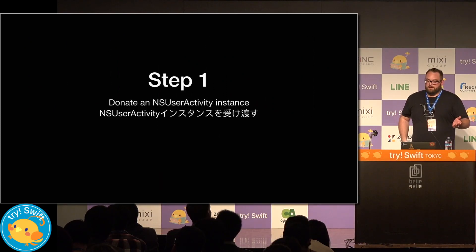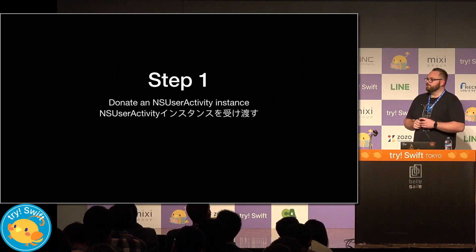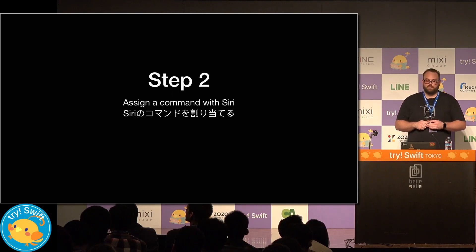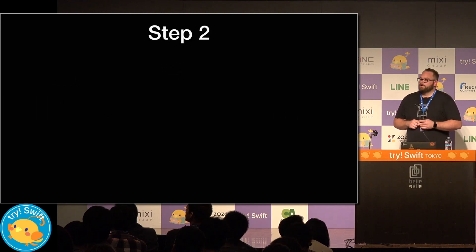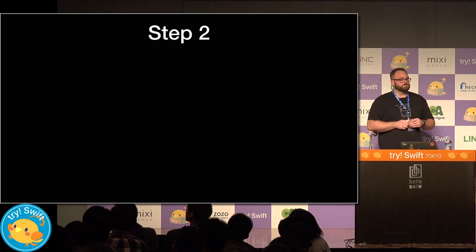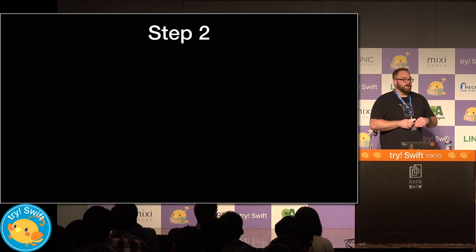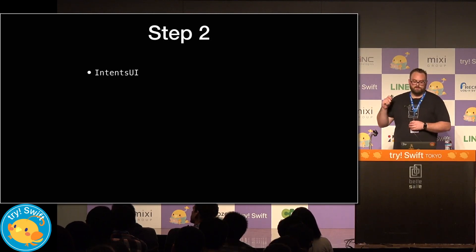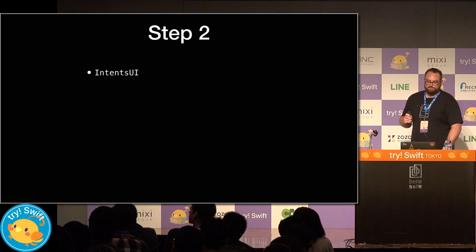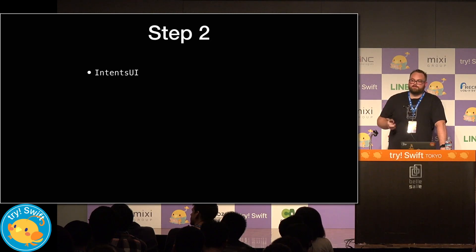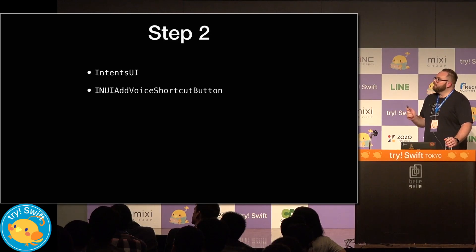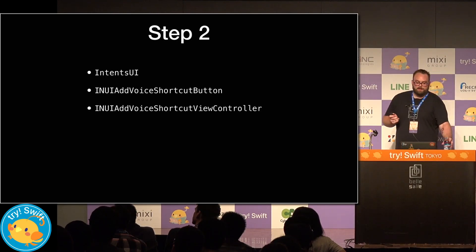That's it for step one. Now we have donated a user activity. Let's go ahead and get into step two, where we encourage the user to create a voice shortcut for it — and it really is pretty awesome. Apple provides a great API that does all of the work for you, so you can encourage your user to create a voice shortcut and have them save it all from within your app. To get access to it, we import the IntentsUI in our view controller. This framework provides access to two classes: the first being `INUIAddVoiceShortcutButton`, and the next being `INUIAddVoiceShortcutViewController`.